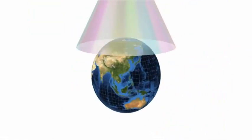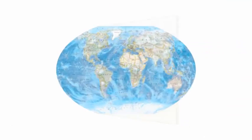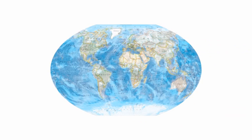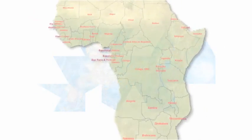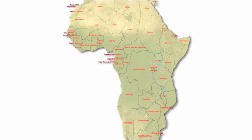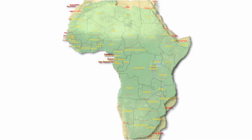Map projections can come in all sorts of shapes and sizes. These shapes are flattened into a two-dimensional paper map or digital data set used in geographic information systems, or GIS. But no matter what shape is used, the resulting flat surface is distorted.